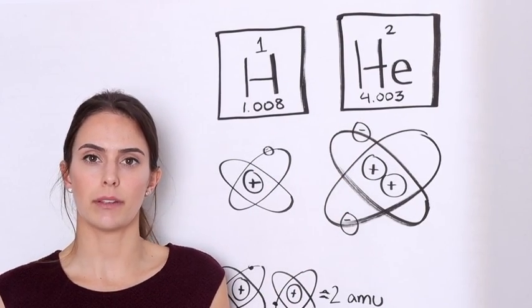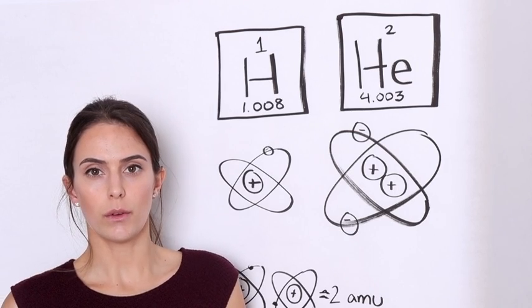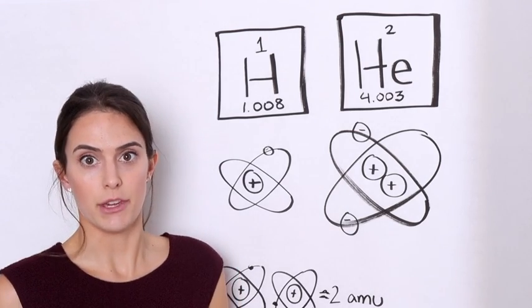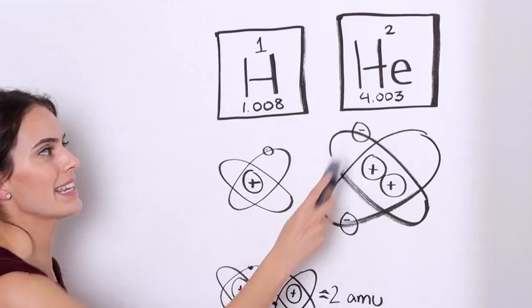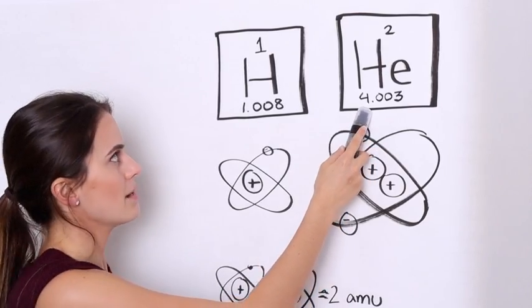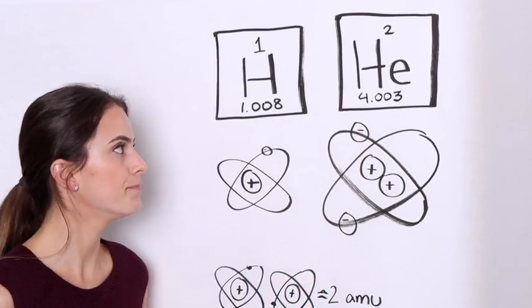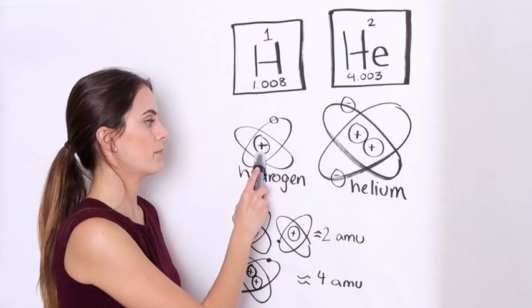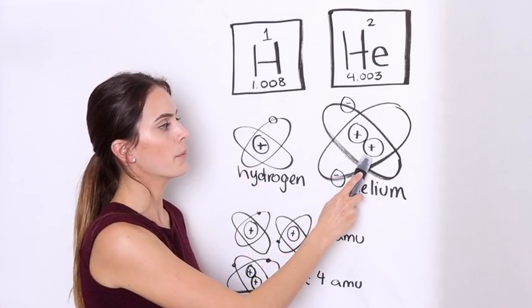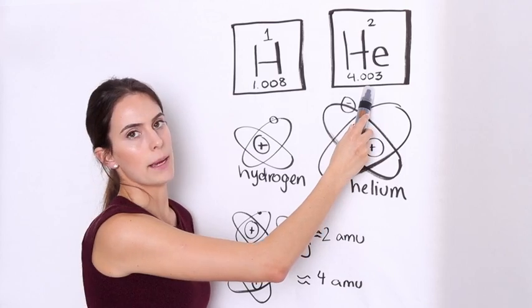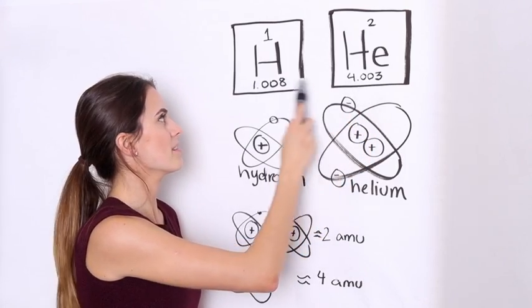At the time scientists believed one proton equals about one amu. So why does helium weigh four times more than hydrogen? If hydrogen has one proton and helium two, why is helium's atomic mass four times greater than that of hydrogen?